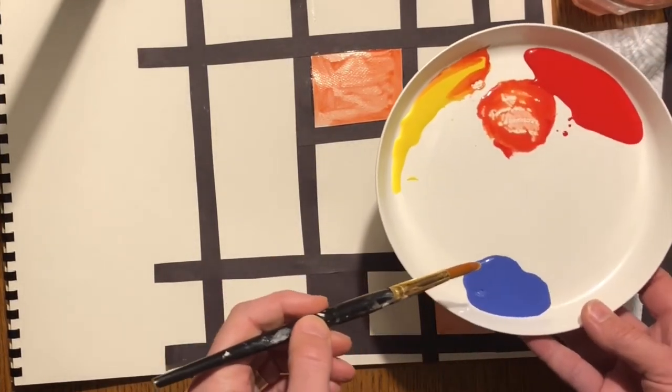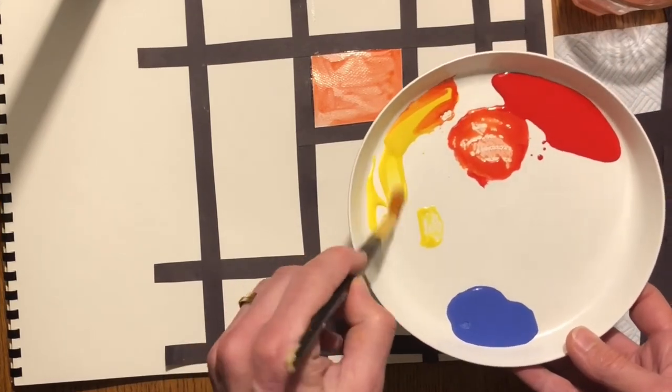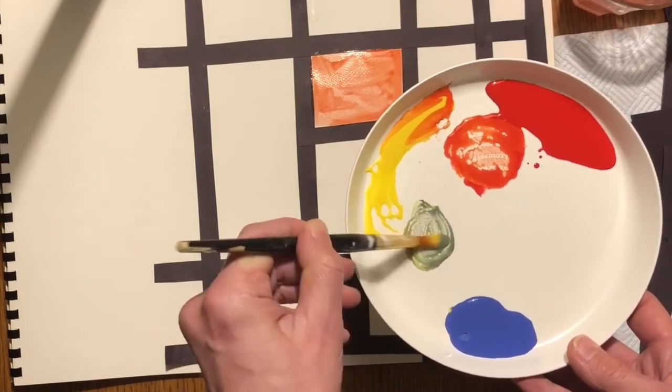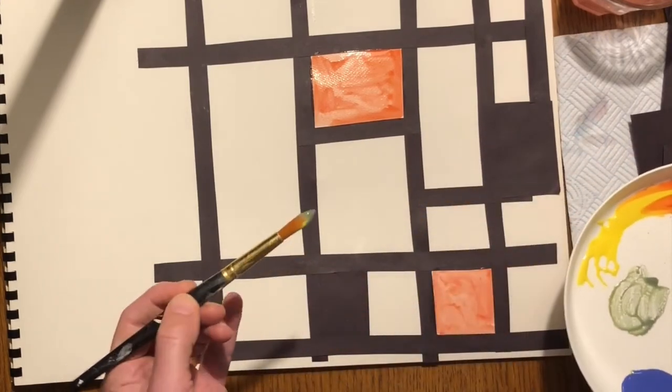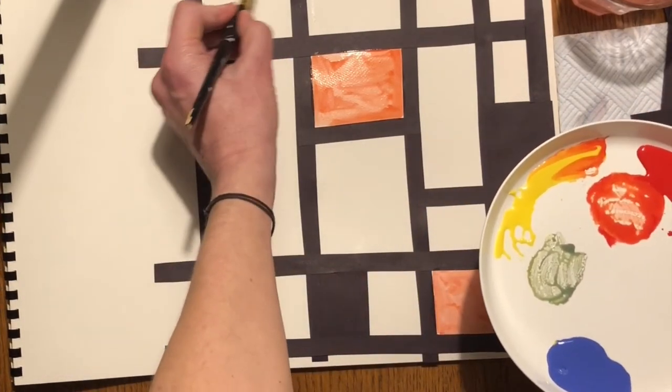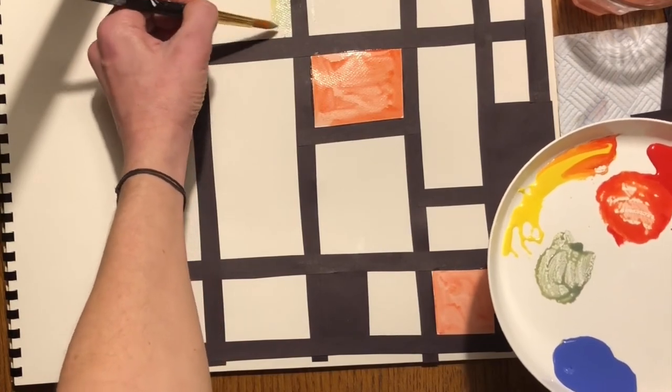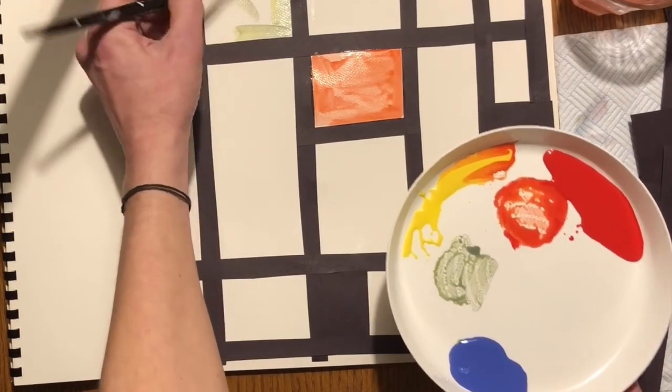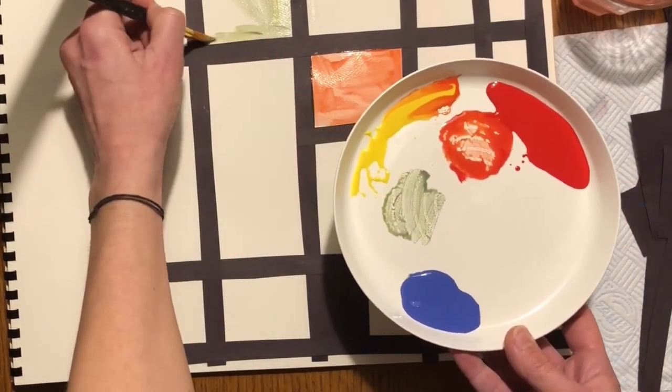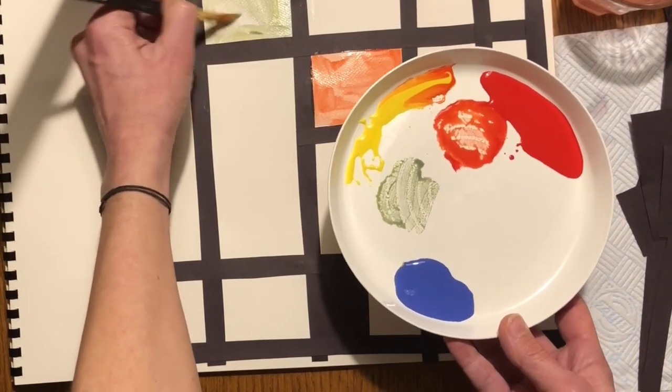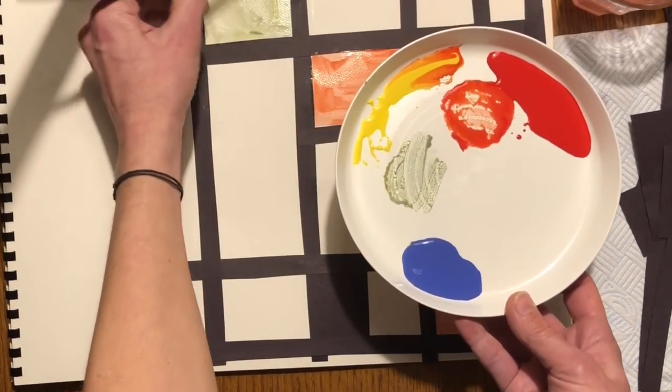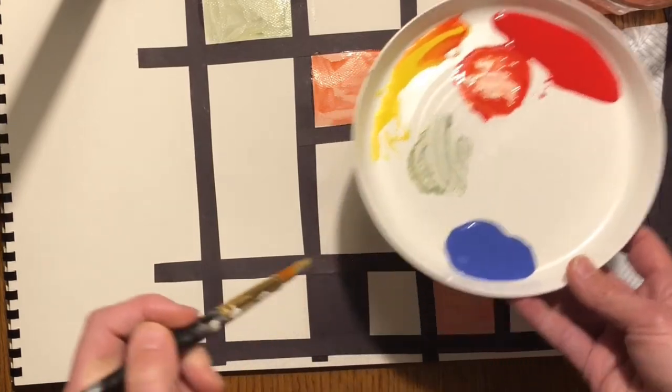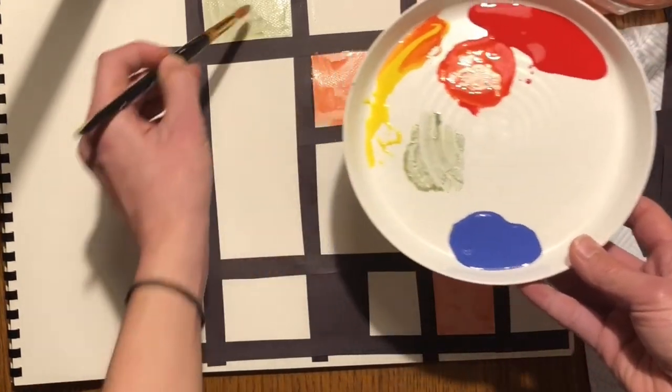Now I'm going to make green. Take some yellow, a little bit of blue. Now I've made green. Decide where to paint your green. Remember, try not to paint on your black lines. I'm only going to have one green square.